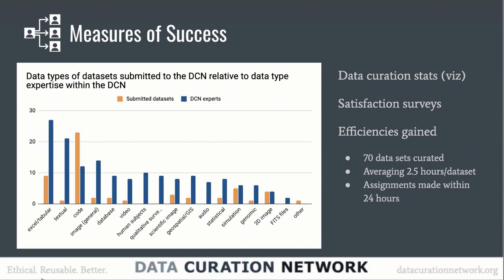Can you clarify — are these deposits of code or deposits of data that include code? Both. I don't like to make too much of a distinction between code and data, because it's difficult to tear apart. We're seeing code that could just be a compiler with no data, but a lot of the datasets we're seeing that have code are more for the reproducibility piece. This graphic won't work for us long term because the numbers of datasets are going to keep going up, while our expertise will grow much more slowly.